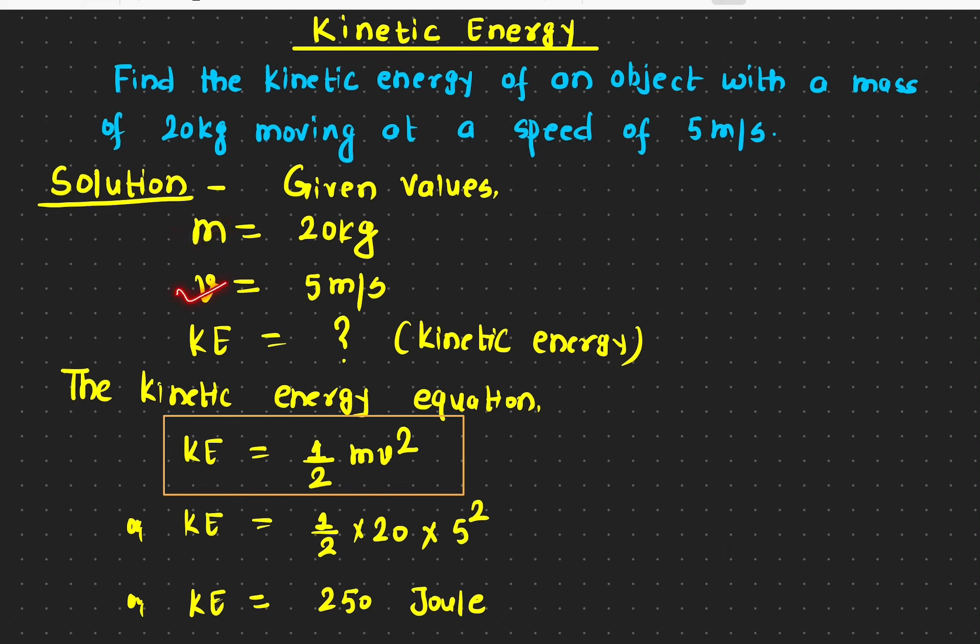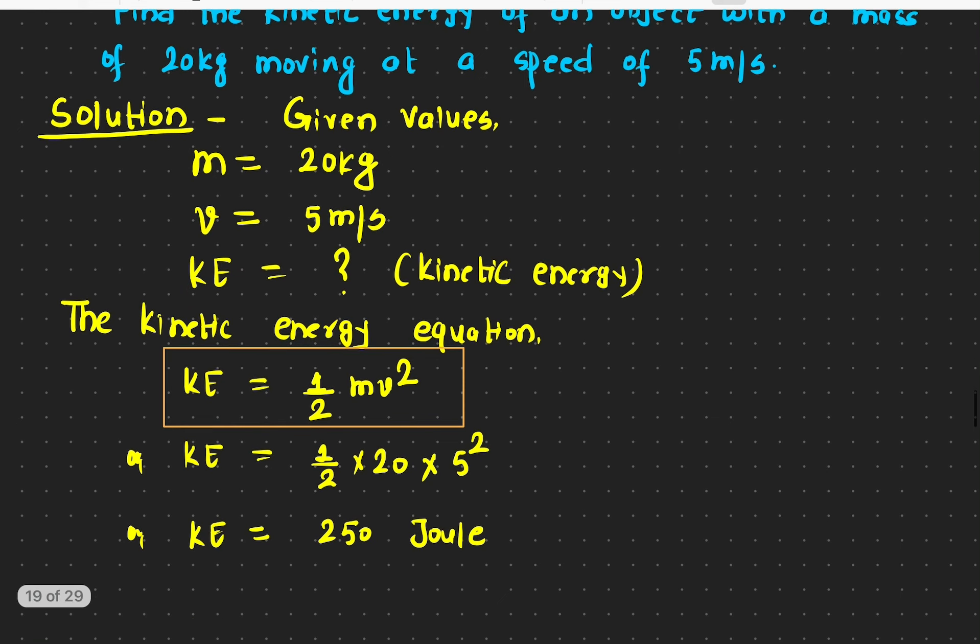First thing we start is write down all the given values: the mass is 20 kilograms, the speed is 5 meters per second, and we need to find out the kinetic energy. The equation is half mv squared for the kinetic energy.